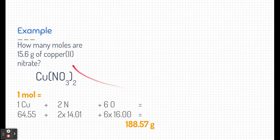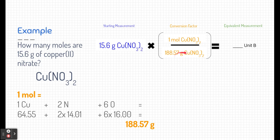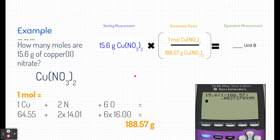This is going to help us with our conversion. Our conversion process starts with our measurement: 15.6 grams of copper(II) nitrate. Our conversion factor, determined using the periodic table, is one mole equals 188.57 grams. Notice I put grams on the bottom so they cancel out with the grams of our starting measurement. Plugging this into a calculator, we get 0.0827 moles of copper(II) nitrate, which is equivalent to 15.6 grams.